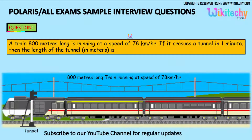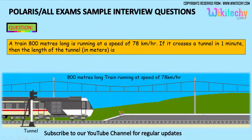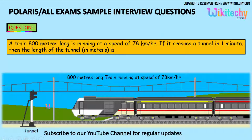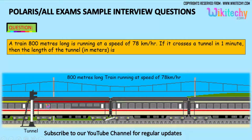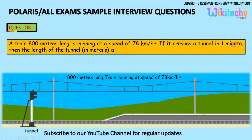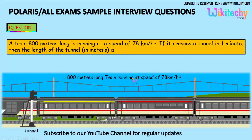A train 800 meters long is running at a speed of 78 km per hour. If it crosses a tunnel in one minute, then the length of the tunnel is what?